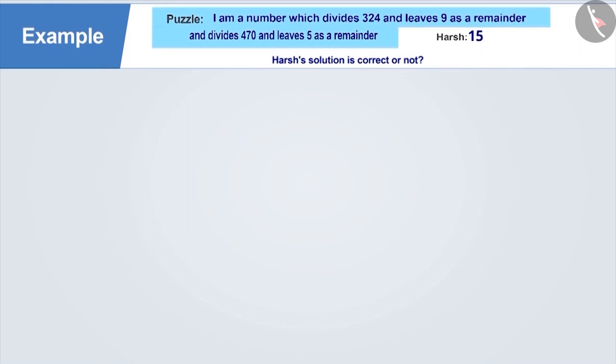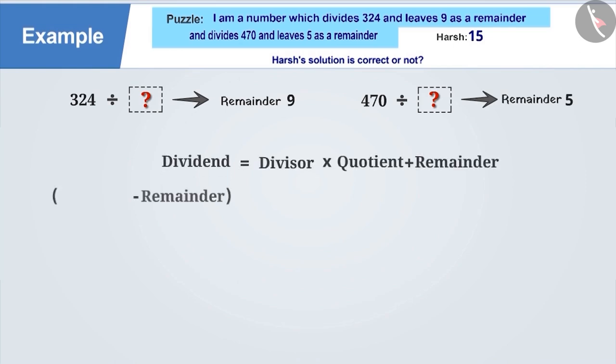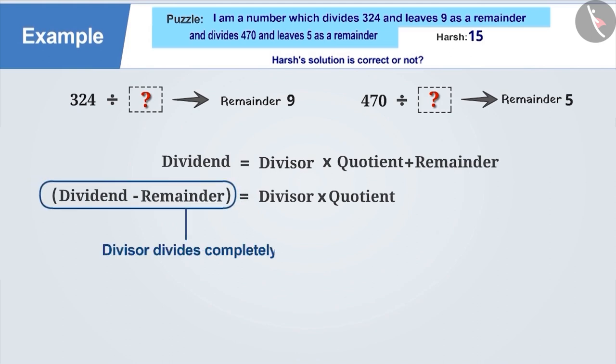Let's understand the puzzle first. In the puzzle, the number divides 324 and leaves 9 as a remainder and divides 470 and leaves 5 as a remainder. If we subtract the remainder from the dividend, the number obtained is completely divisible by the divisor. This means, by subtracting 9 from 324, we get 315 and this is completely divisible by the required number.